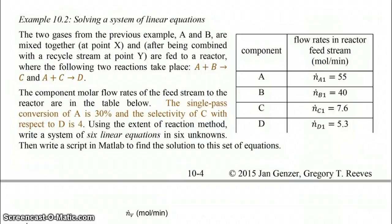In this next example, example 10.2, we're going to look at the conversion across a reactor with these two reactions taking place in the reactor. So A plus B goes to C, and then A plus C, C gets degraded into D.